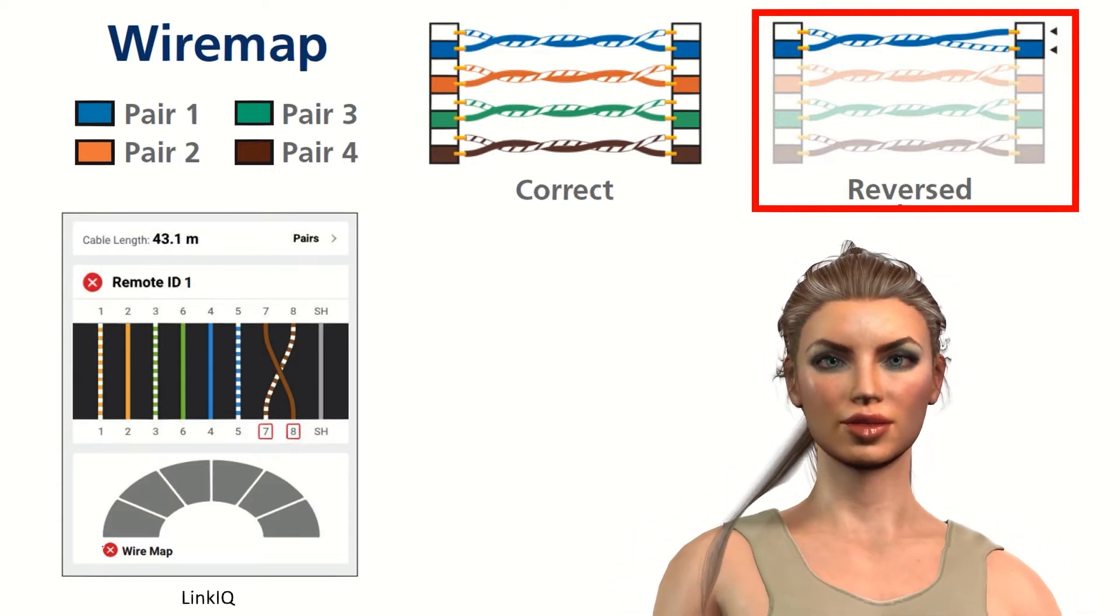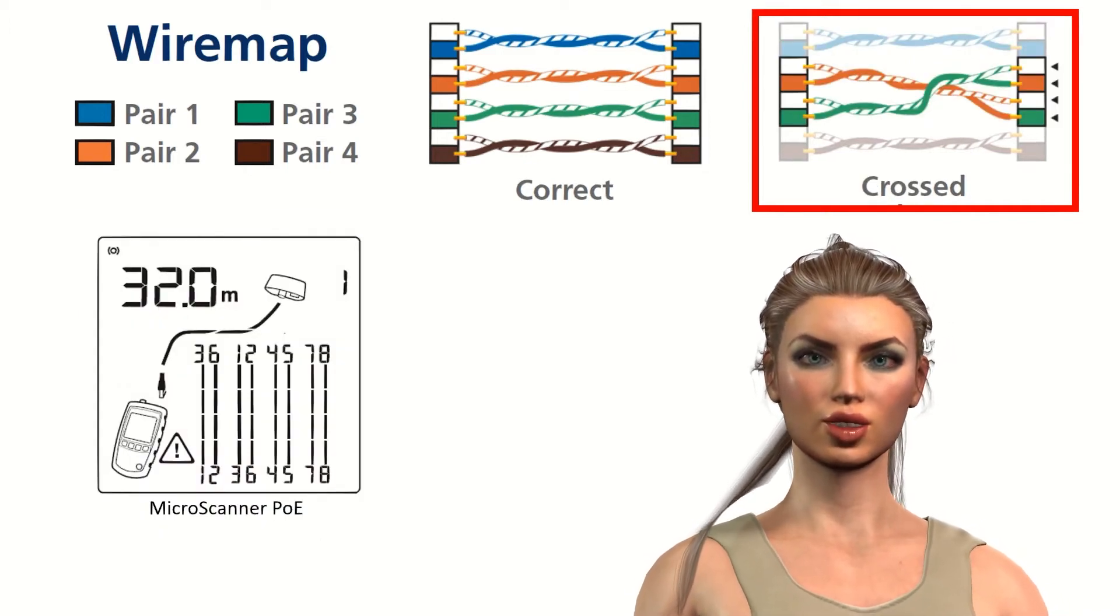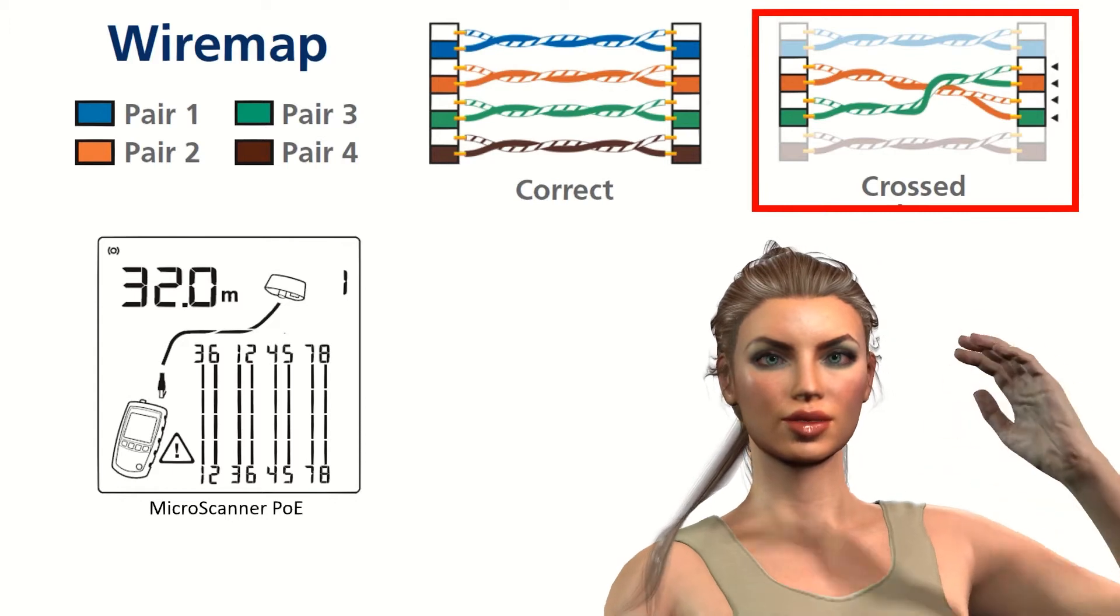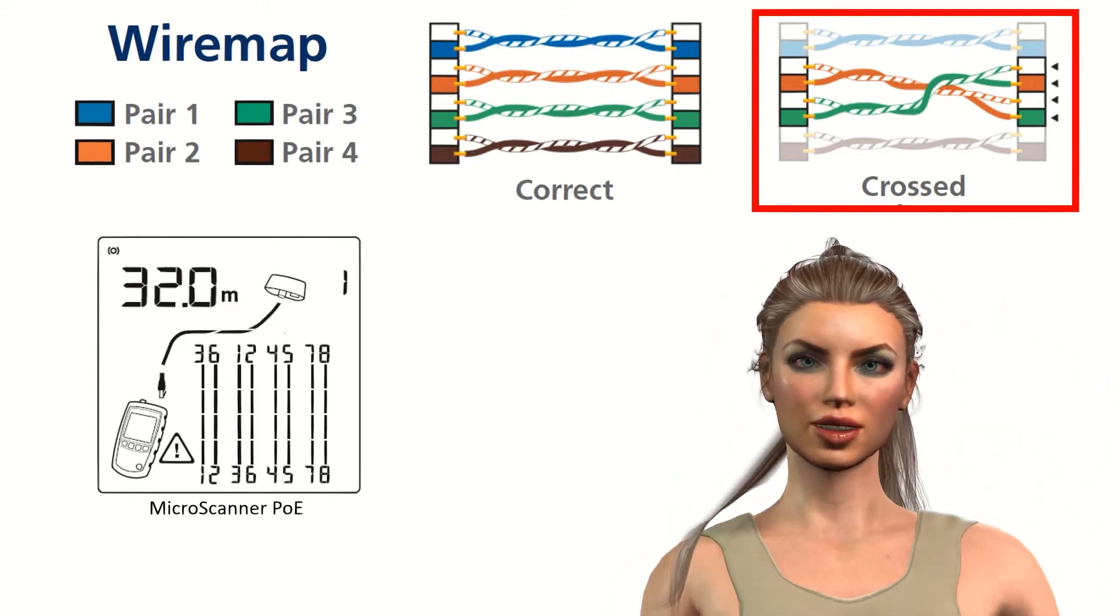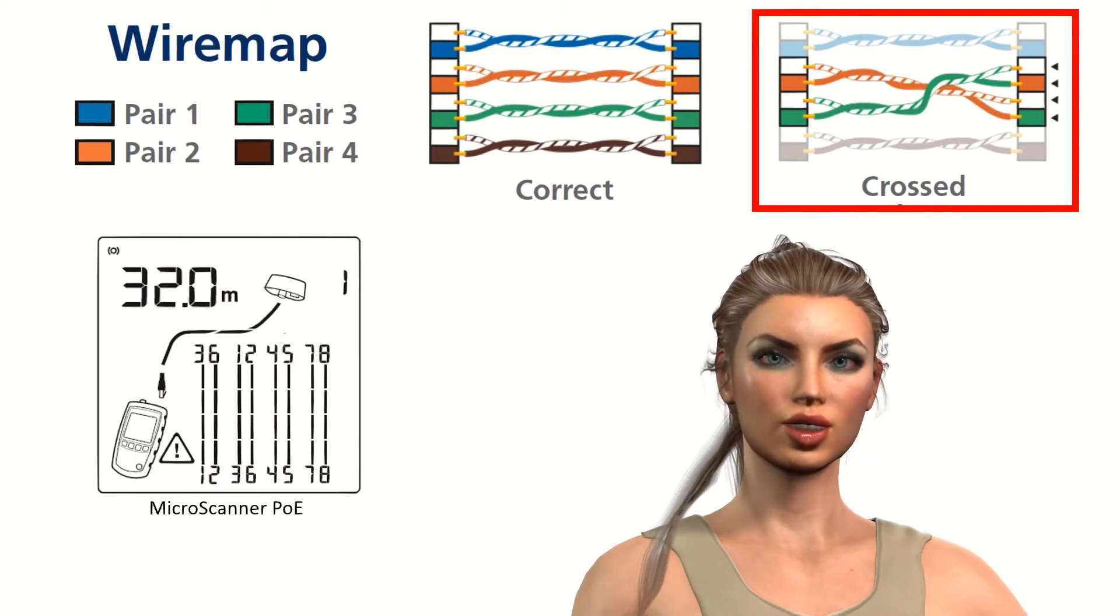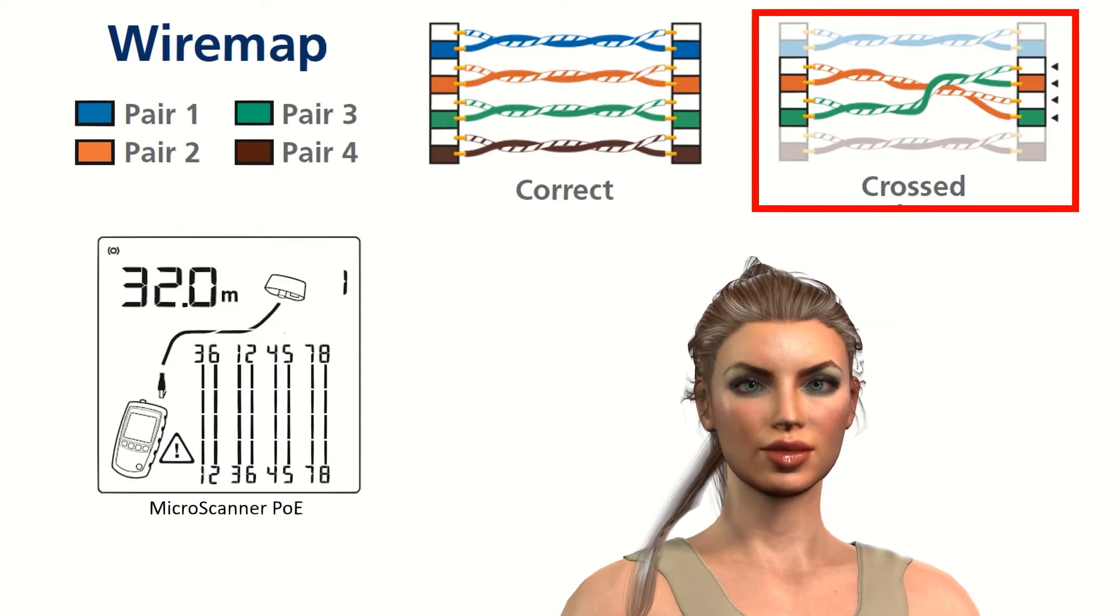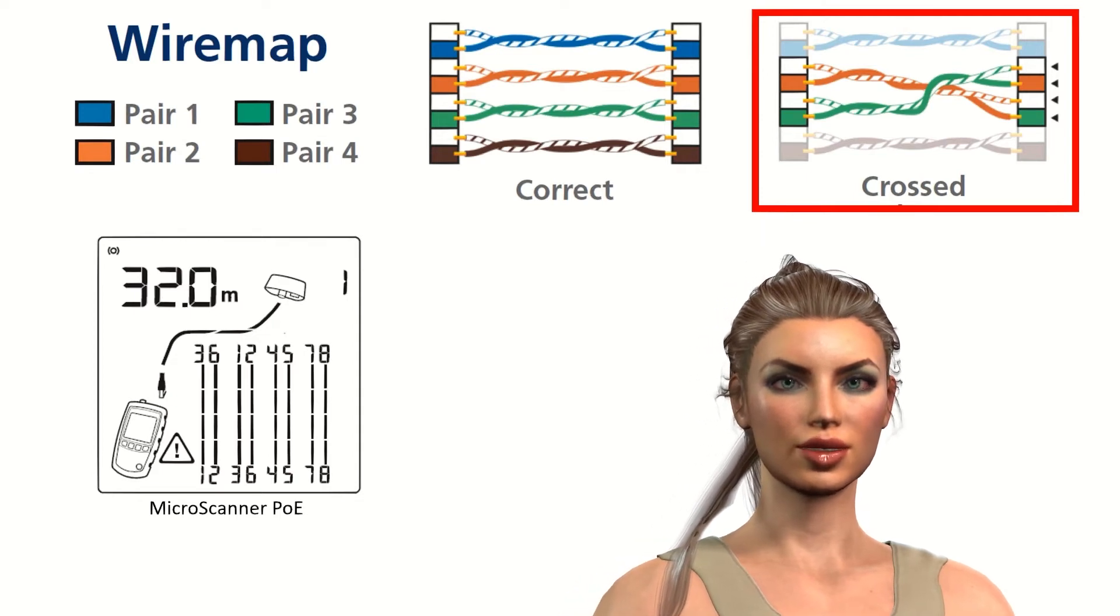Cross pairs: this situation happens when the two wires of the same color in one pair are connected to the pins of a different pair at the other end. An example would be when the pair terminated at pins 3 to 6 at one end is terminated at pins 4 to 5 at the other end, as we see in the example above.